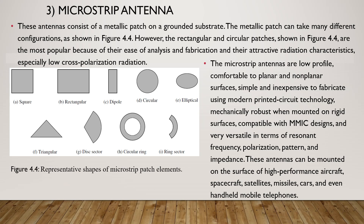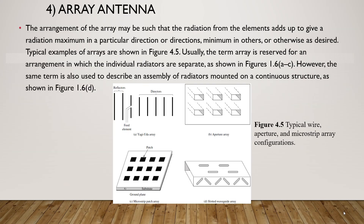These antennas can be mounted on the surface of high-performance aircraft, spacecraft, satellites, missiles, cars, and even handheld mobile telephones. The arrangement of an array antenna may be such that the radiation from the elements adds up to give maximum radiation in a particular direction or directions, minimum in others, or otherwise as desired. Typical examples of arrays are shown in figure 4.5.